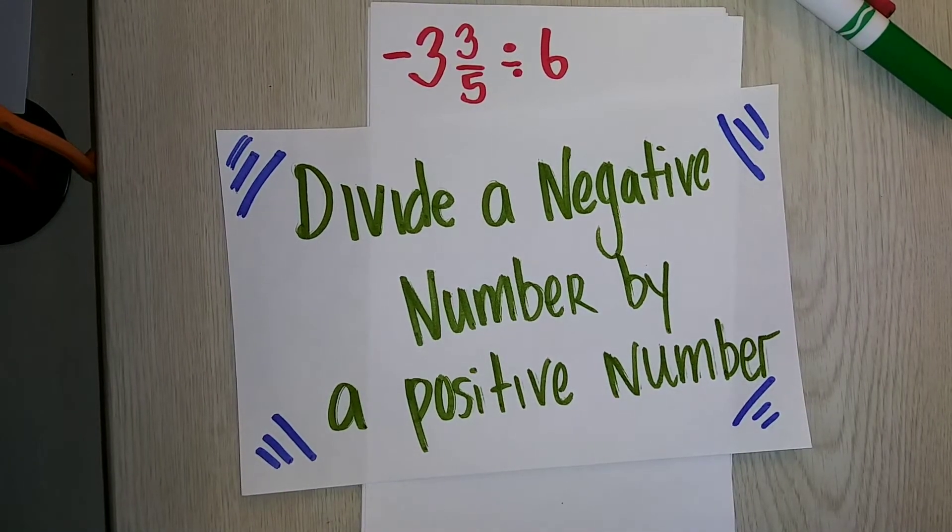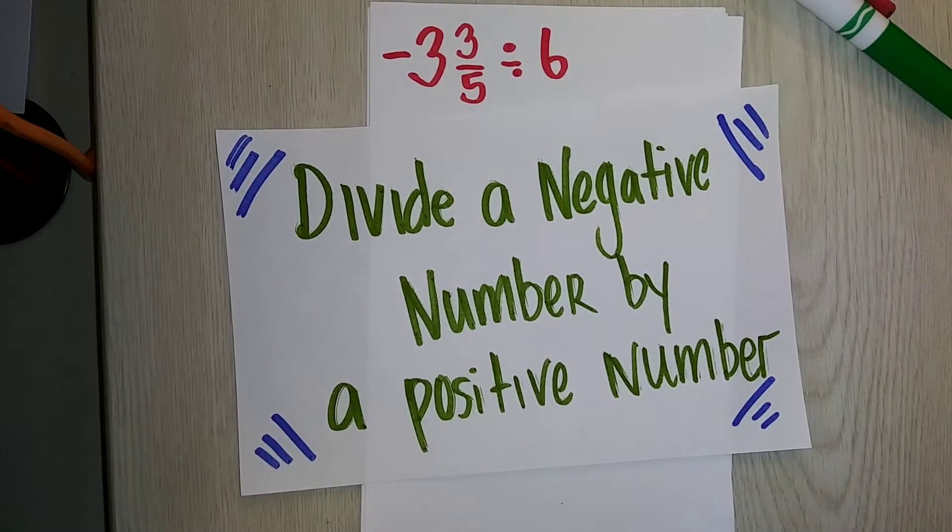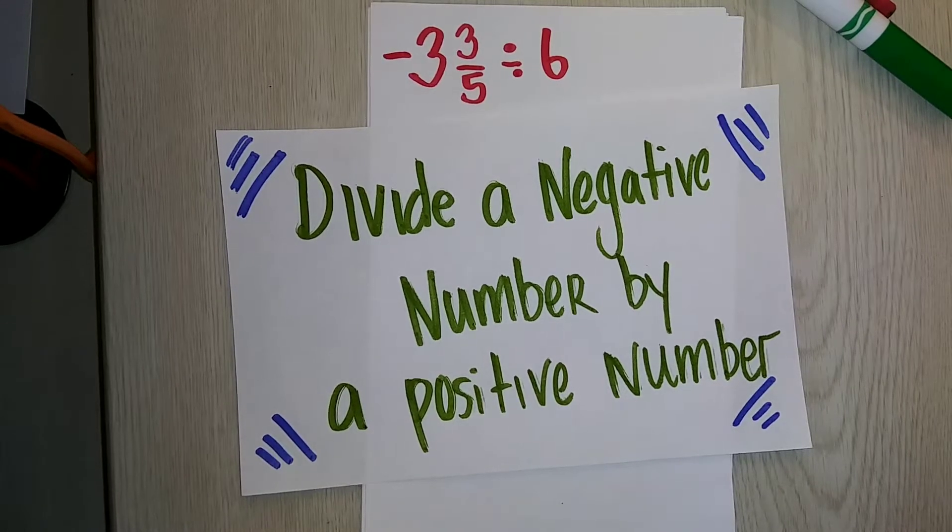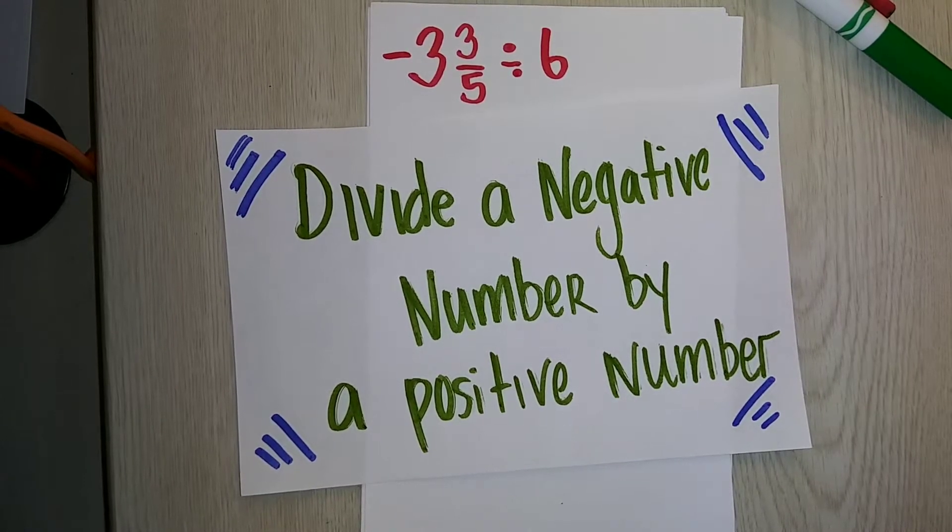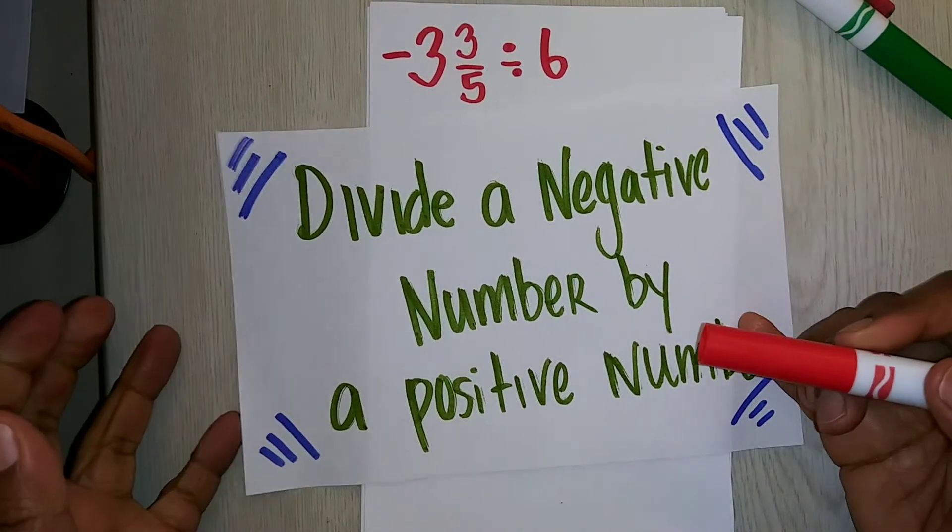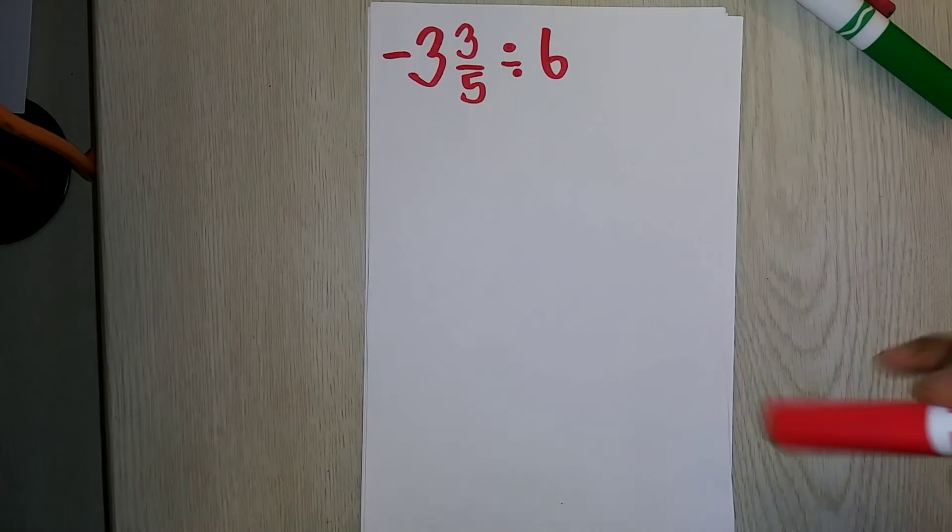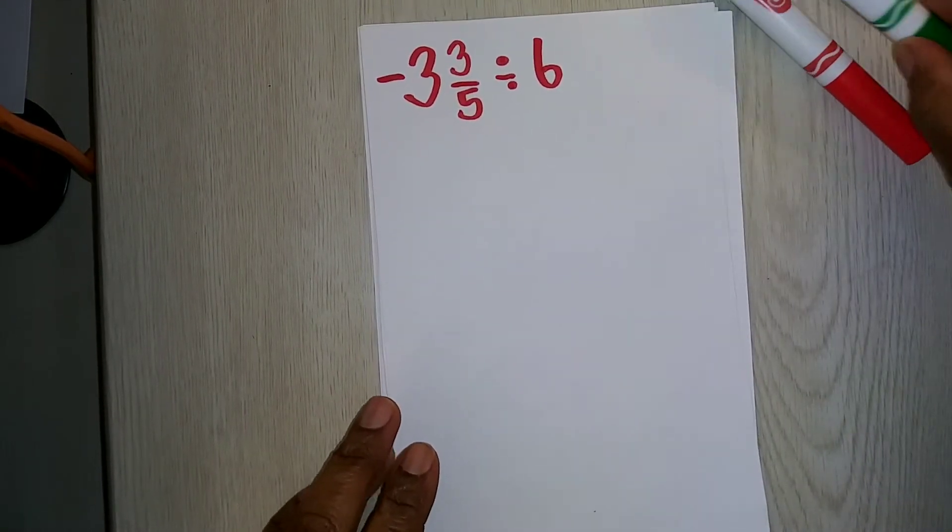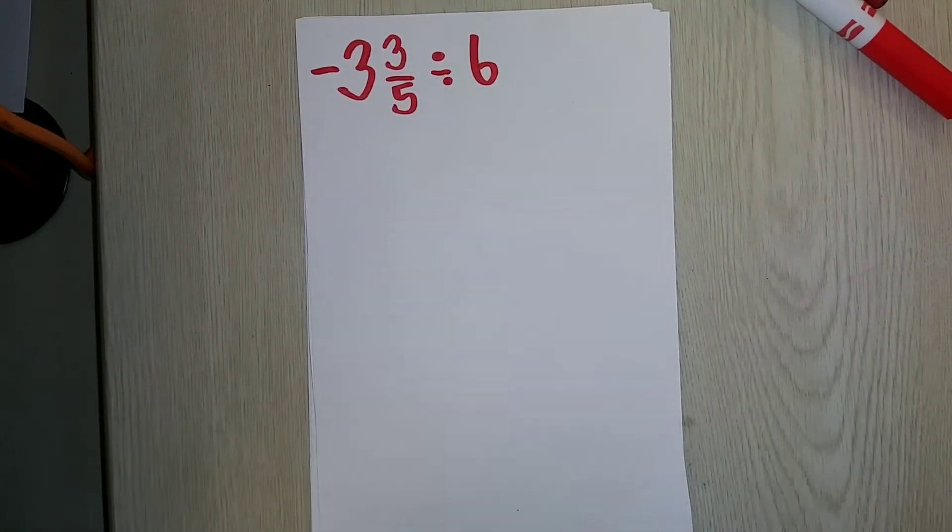In this video, we will extend what we know about multiplying rational numbers and dividing integers to division of a rational number. In order to divide a negative number by a positive number: negative 3 and 3 fifths divided by 6.